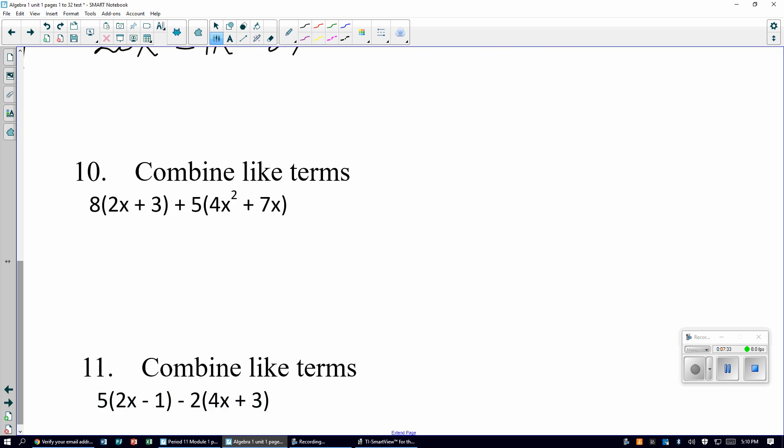Combine like terms on this one. Now we have to distribute. Remember, you got to distribute all the way through, it's 16x, then you have to do the plus 24. 5 times 4x squared is 20x squared, 5 times 7x is 35x, we're not done. We have to combine the 16x and the 35x. There is nothing to combine with the 20x squared. So 16x and 35x is 51x. I'm going to put the 20x squared in front because it is a higher exponent. The 51x was positive, and then plus 24. That is the final answer.